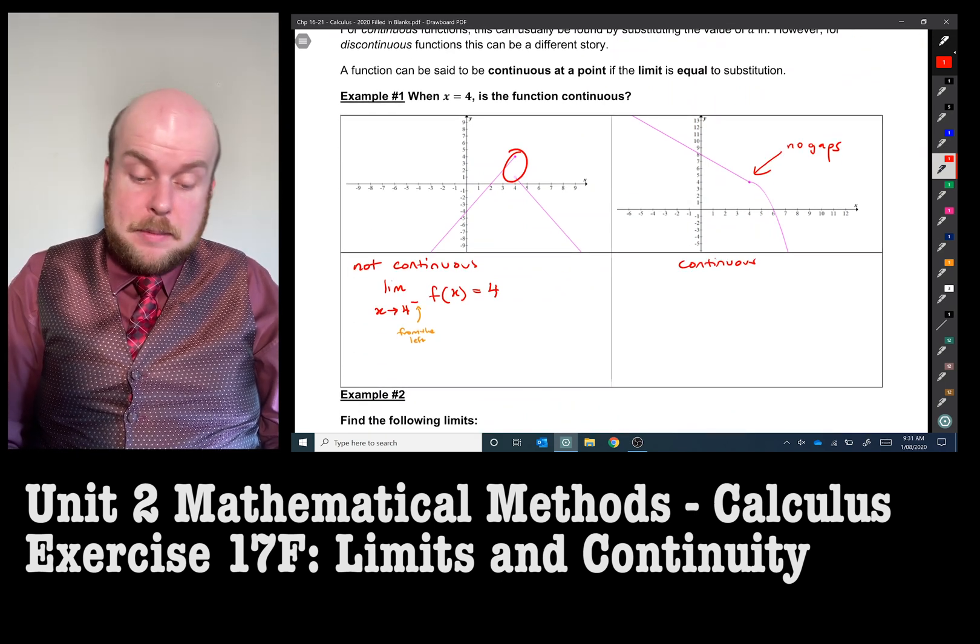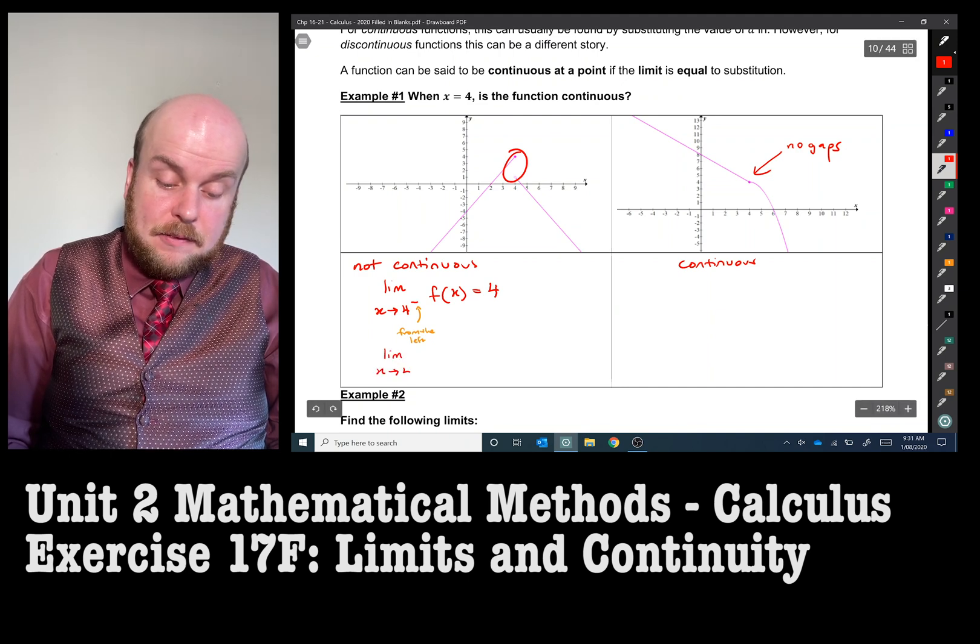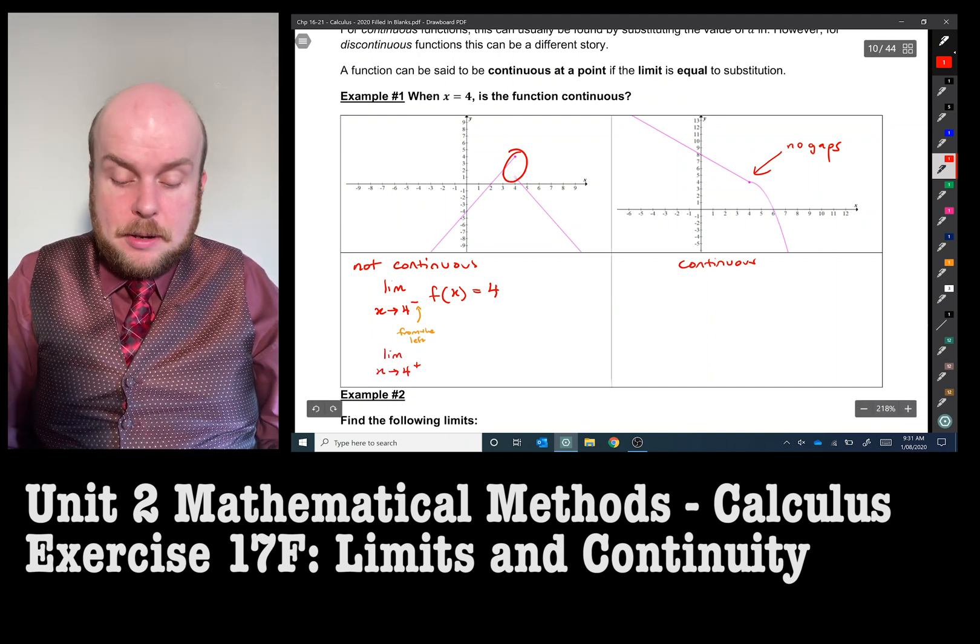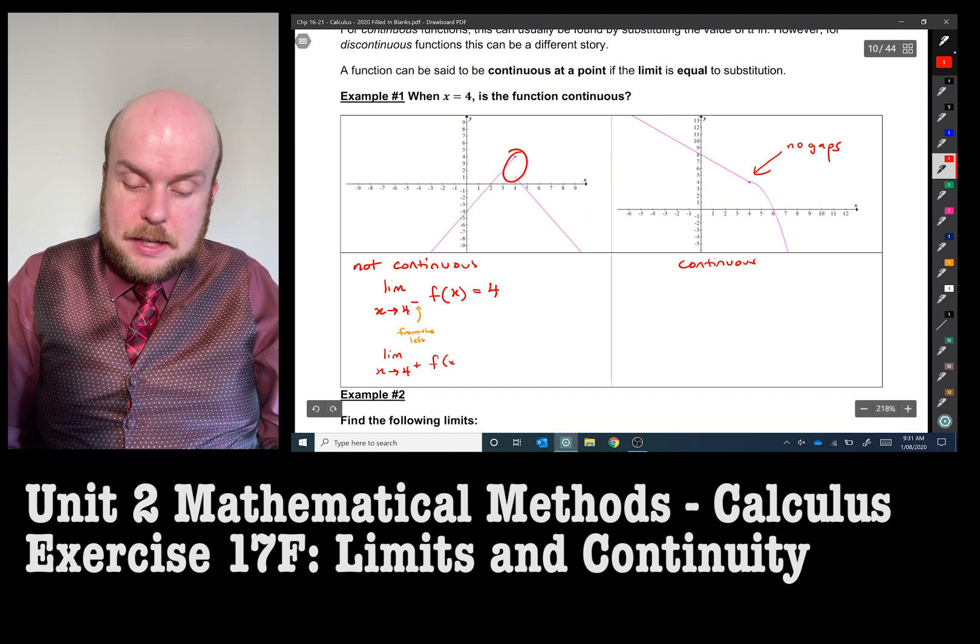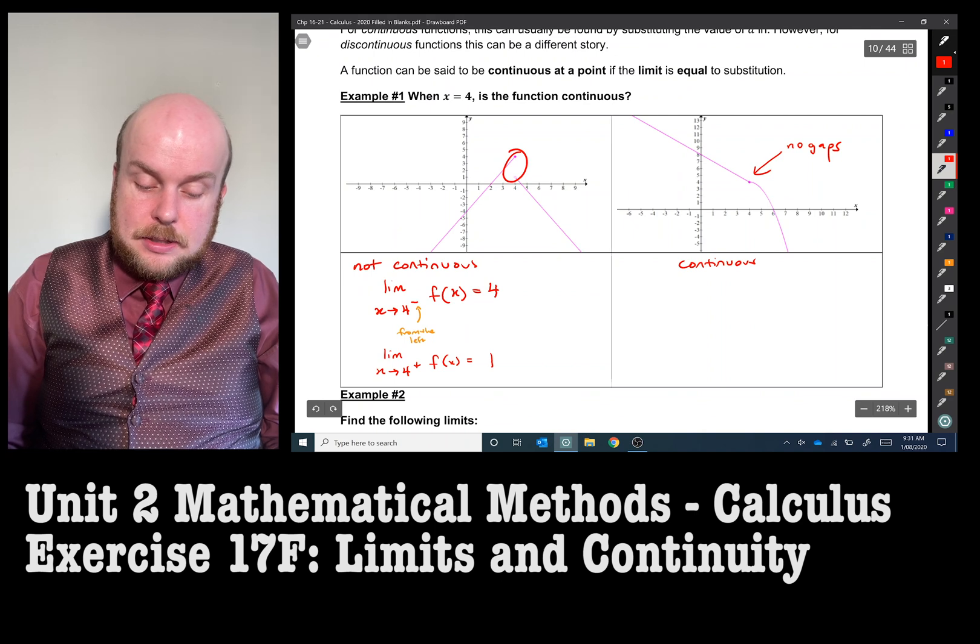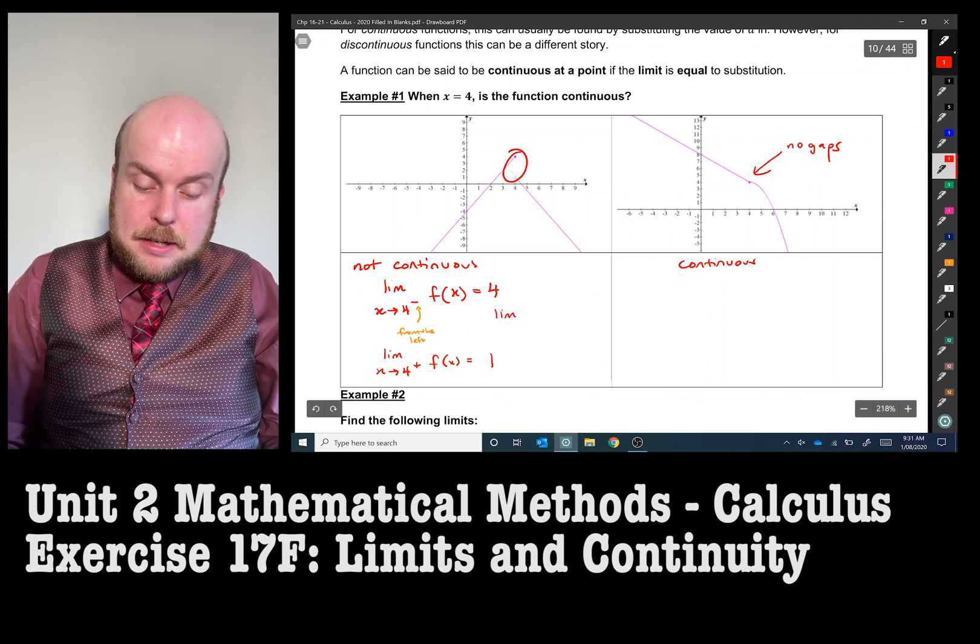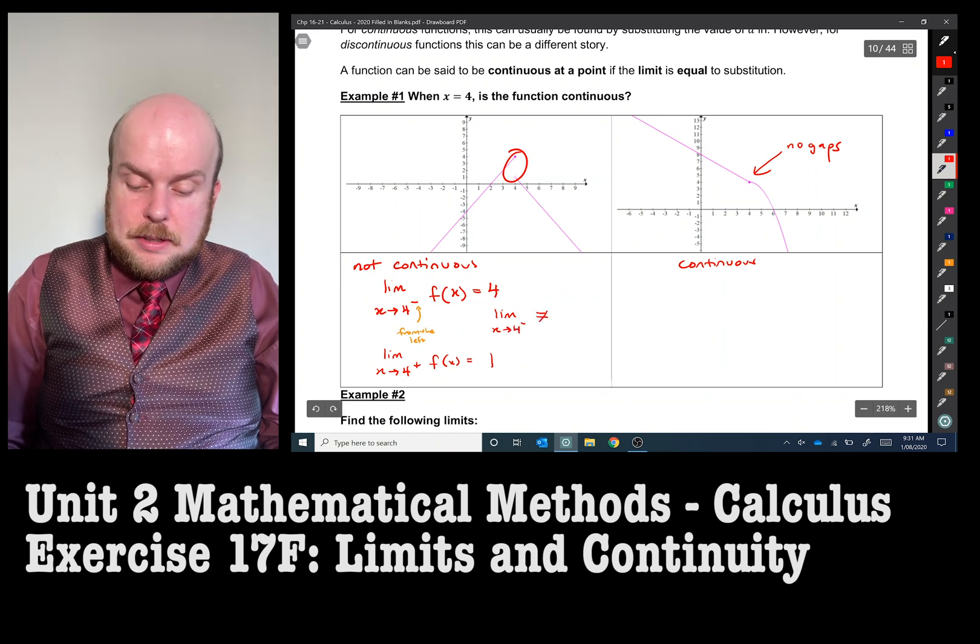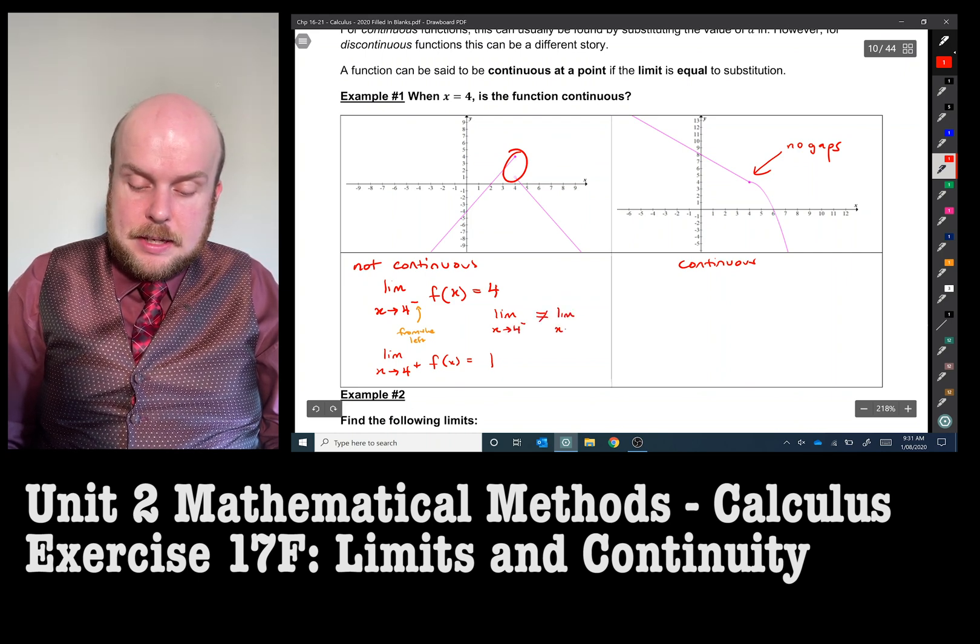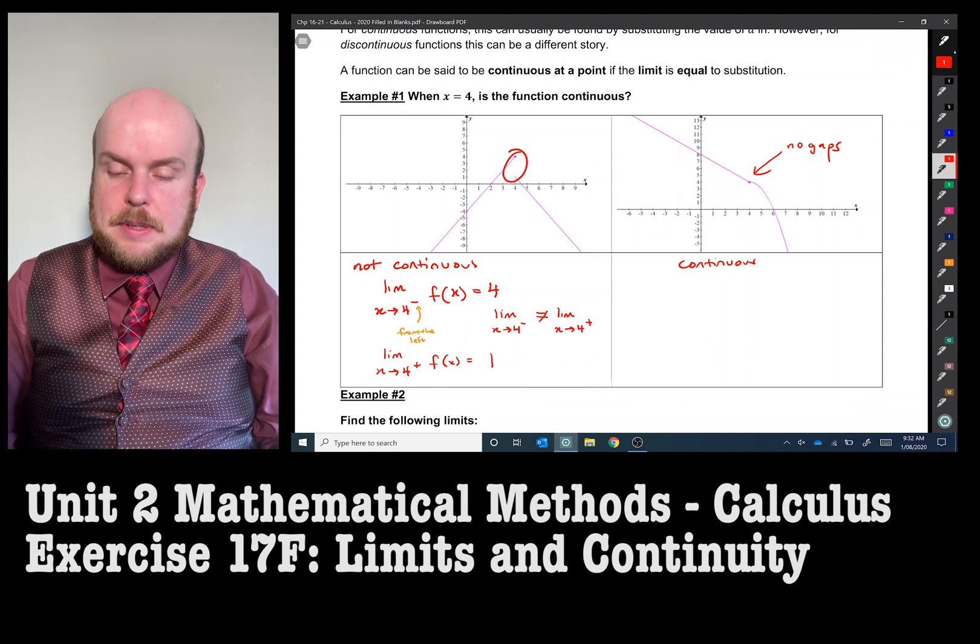And then if I was to come from the other side, with a little positive sign at the top, f of x is equal to, in this case it would be 1. And so all I can say here is that the limit as x approaches 4 from the negative does not equal the limit as x approaches 4 from the right and therefore it is not continuous.